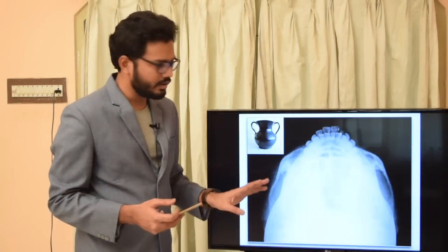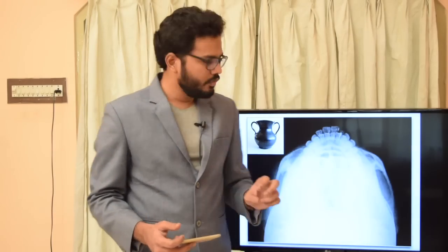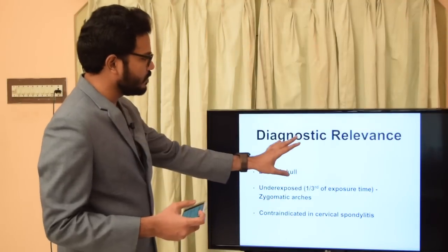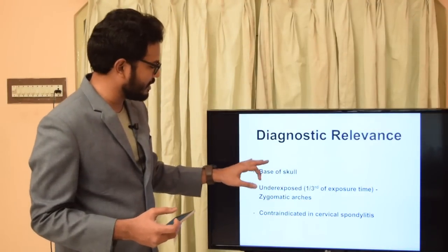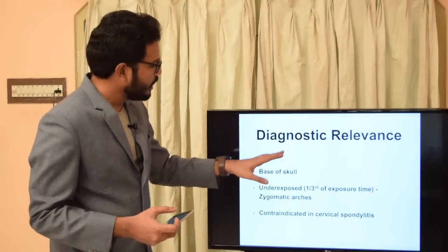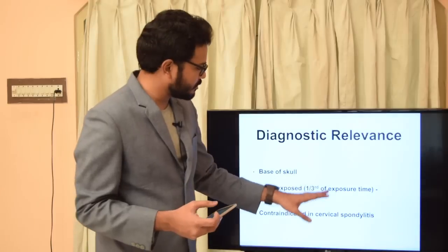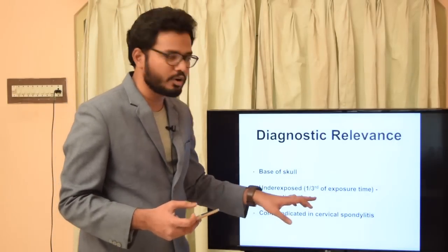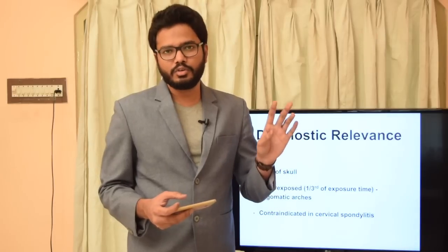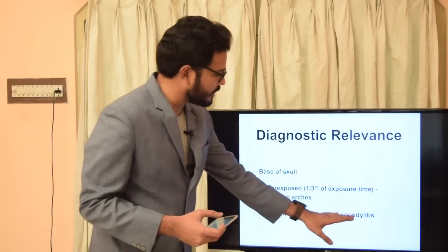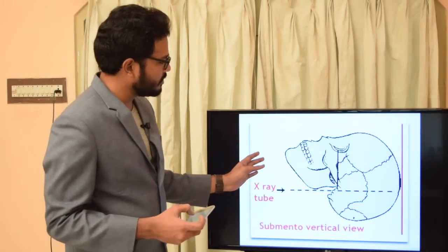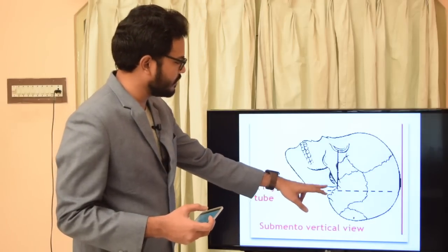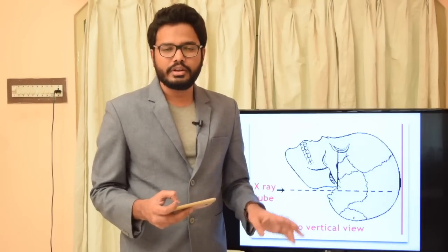When exposure is reduced to one-third, the prominent zygomatic arches create what is called the jug handle appearance, as it resembles the handles of a jug. Zygomatic arch fractures are clearly visualized in submental vertex projection. This projection is contraindicated in patients with cervical spondylitis, as excessive bending of the neck can cause trauma to the cervical vertebrae.